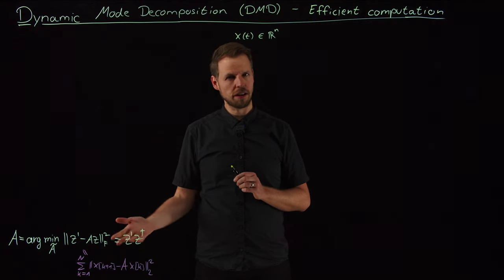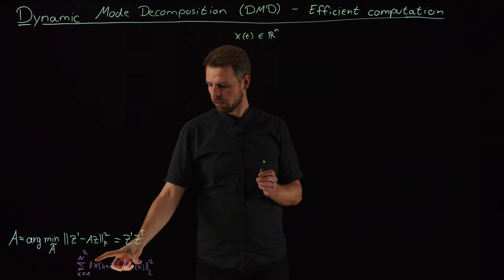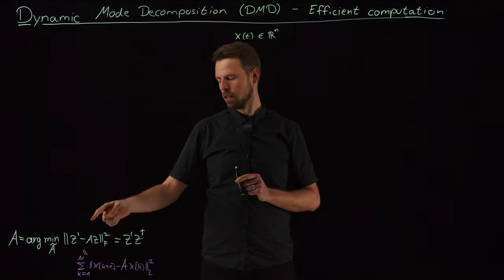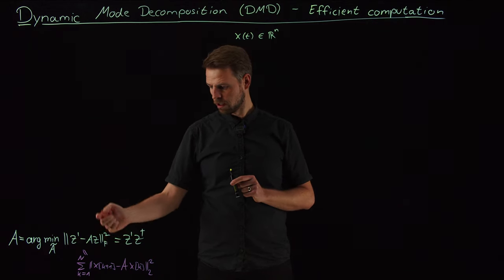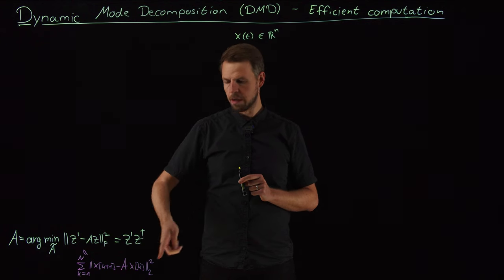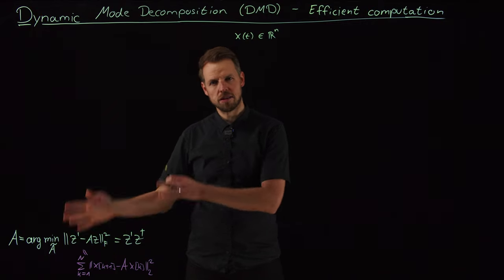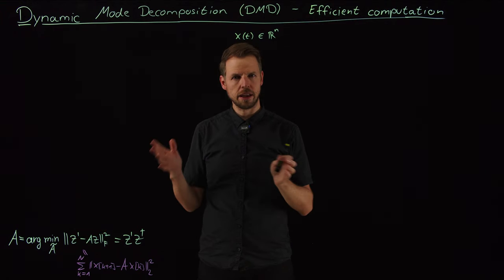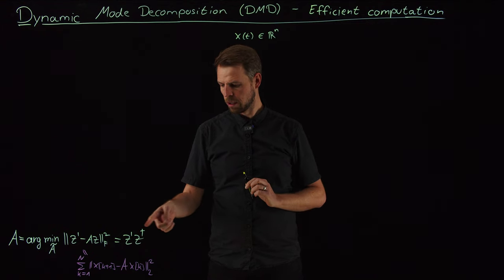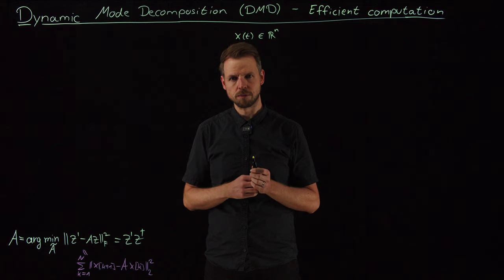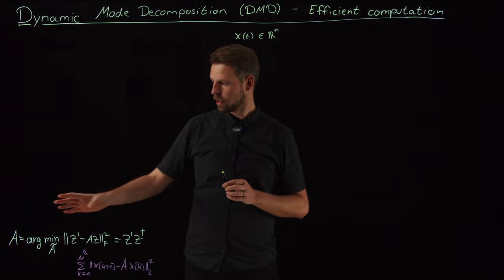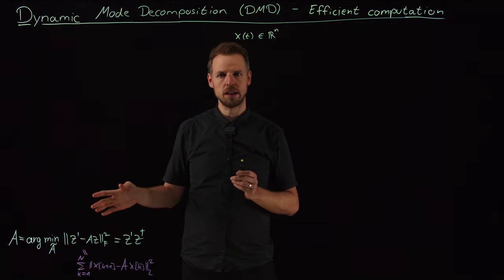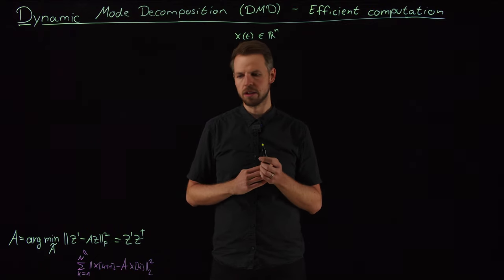If the system is nonlinear, this A obviously does not exist, so this loss function will not be zero — we have to make a mistake. But if we solve this minimization problem, we get the best linear fit: the best matrix mapping the columns of Z (x₁ through xₙ₋₁) to the next time step (x₂ through xₙ). This is nothing but a multivariate regression problem: Z' times the pseudo-inverse of Z. We can then decompose this into eigenvectors and eigenvalues and infer stability, long-term behavior, and so on.